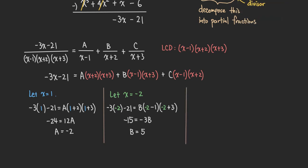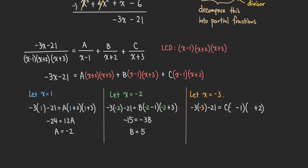One more: choose x equal to negative 3, because that makes the A and B terms disappear, leaving just the C term. So we get negative 3 times negative 3 minus 21 equals C times negative 3 minus 1 times negative 3 plus 2. The left side gives positive 9 minus 21, which is negative 12. That equals negative 4 times negative 1, which is 4C. So C equals negative 3. We have now found all three unknown constants.